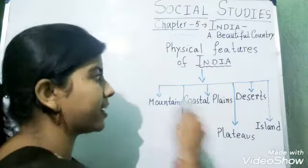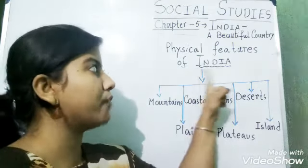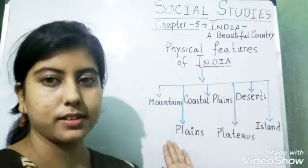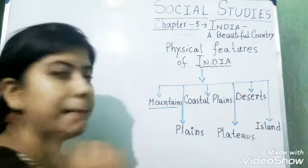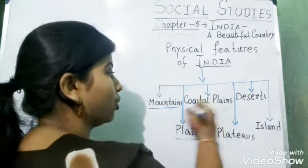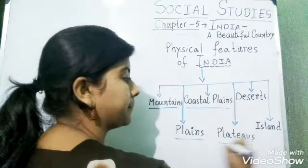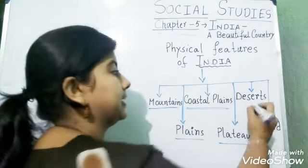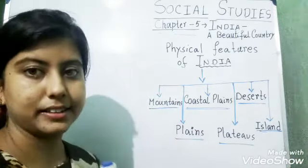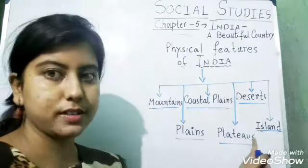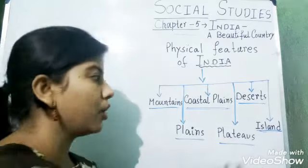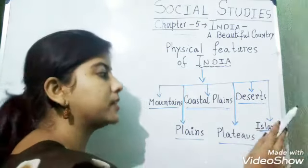I have written a diagram showing the physical features of India. We can divide India into these physical features: the first one is mountains, the next is plains, then coastal plains, then plateaus, after that deserts, and lastly we have islands. These are the physical features that we can see throughout our country.